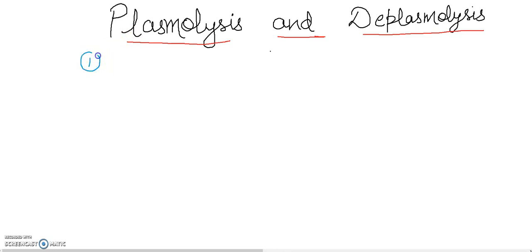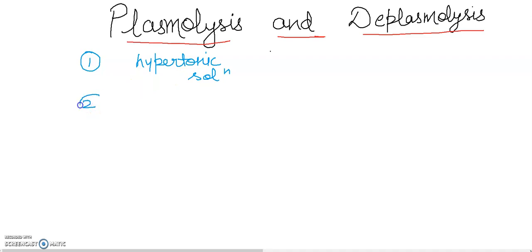So what is going to happen in plasmolysis? I'm going to give you a comparative chart. In plasmolysis, the first point is: cell is placed in a hypertonic solution. Plasmolysis occurs when we place the cell in a hypertonic solution — that means a concentrated solution where concentration outside the cell is higher than inside. The water potential is lower, and in this condition the protoplasm will shrink.